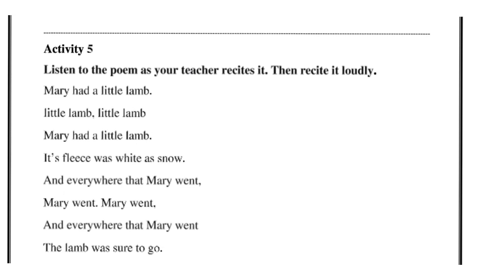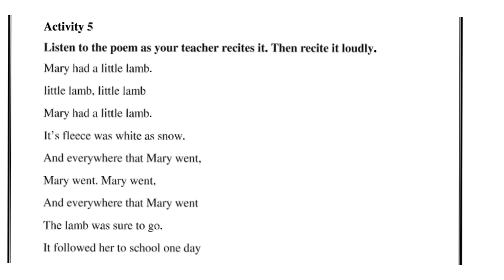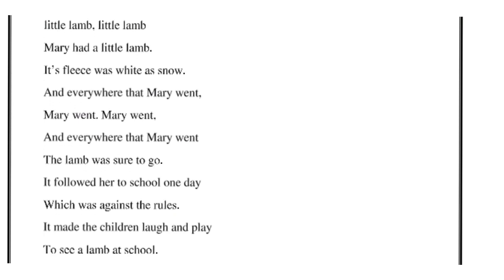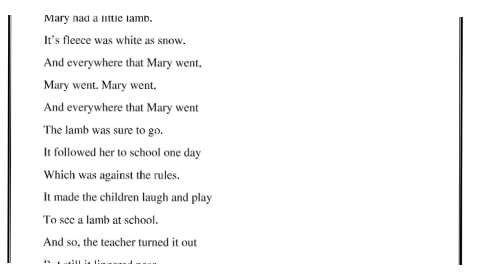Activity 5: Listen to the poem as the teacher recites it, then recite it loudly. Mary had a little lamb, little lamb, little lamb. Mary had a little lamb, its fleece was white as snow. And everywhere that Mary went, Mary went, Mary went. And everywhere that Mary went, the lamb was sure to go. It followed her to school one day, school one day, school one day, which was against the rules. It made the children laugh and play, laugh and play, to see a lamb at school.